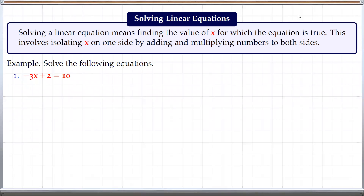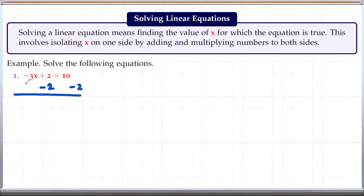Here is our first example. We have negative 3x plus 2 equals 10. Our goal here is to isolate x on one side. First, we want to have the term containing x on the left side, so we need to get rid of the 2 from the left side. We just subtract 2 from both sides. Then we have negative 3x plus 2 minus 2, which is negative 3x on this side, and on the right side we have 10 minus 2, which is 8.